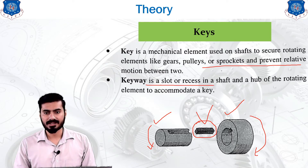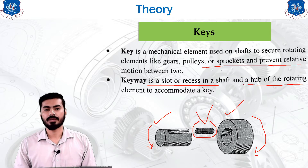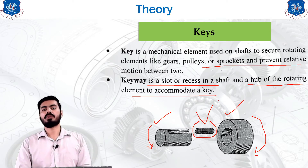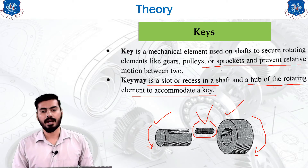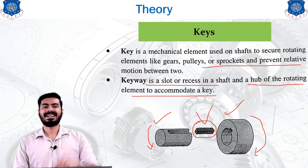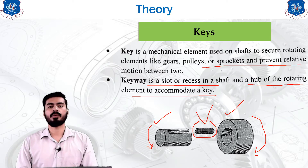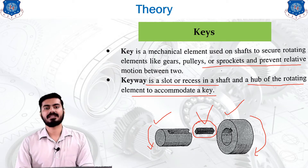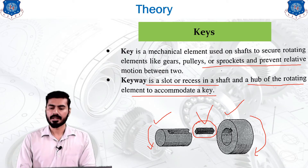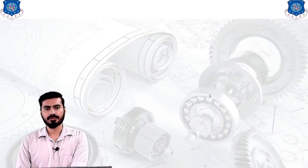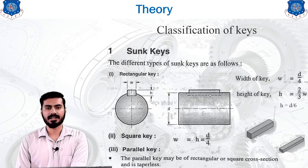A keyway is a slot or recess in the shaft or hub of the rotating element to accommodate the key. It is a slot into which we insert a metal component so that we can prevent unwanted rotation. This is the basic idea of the key.